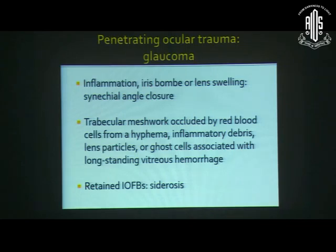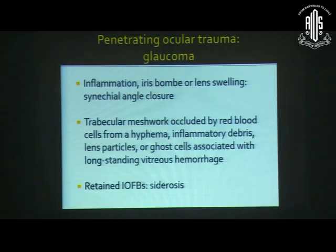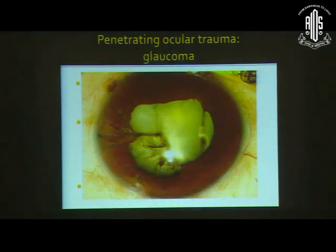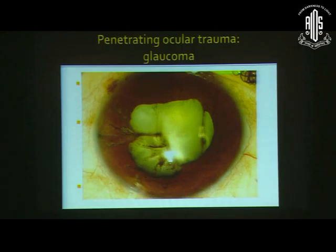Trabecular meshwork occluded by red blood cells from hyphema, inflammatory debris, lens particles, or ghost cells can also result in increased IOP. In cases with a retained intraocular foreign body, siderosis can again cause glaucoma. This case shows a ruptured anterior lens capsule with ongoing inflammation leading to formation of multiple synechiae.